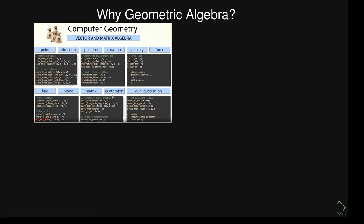If you do computer graphics, you need to implement all these different functions — for example, constructing a plane from points or from an equation. You have lots of different objects: you would use vectors for points and directions, but for some operations you'd need matrices or quaternions for rotating things, and for more complicated cases you can even use dual quaternions. So you just keep adding different kinds of objects and need to convert between all of them. That doesn't feel so great.